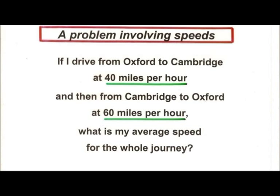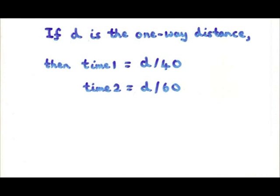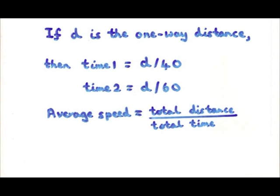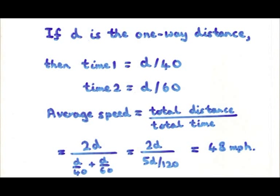So let's check that. I know the distance from Oxford to Cambridge, but supposing we didn't know, so we take D to be the one-way distance. Speed, in miles per hour, is distance over time, therefore time is distance over speed. The time taken to go there is D over 40, because you're going at 40 miles an hour. The time to come back is D over 60. So the average speed is the total distance over the total time. The total distance is 2D — D in each direction — and the total time is D over 40 plus D over 60.